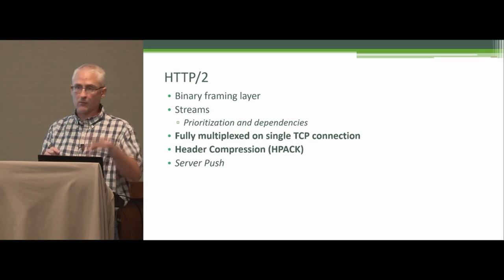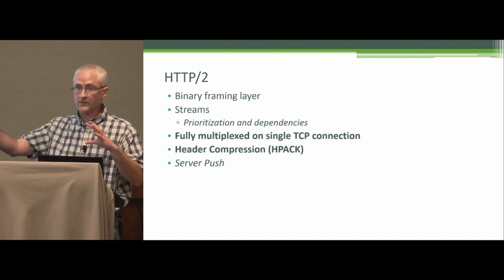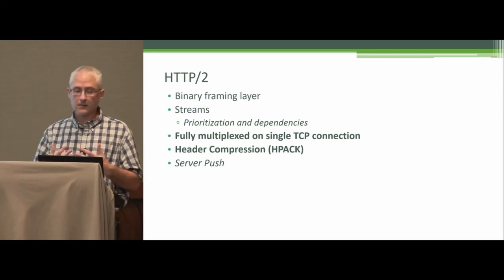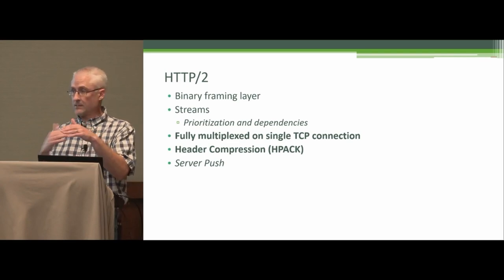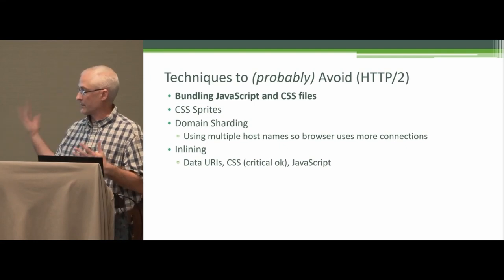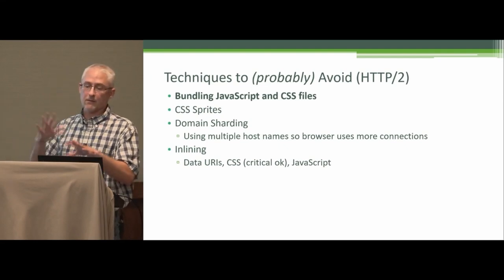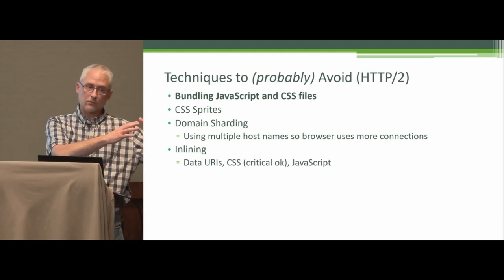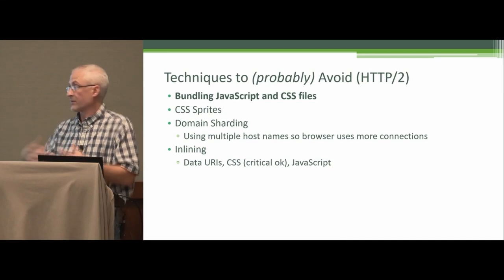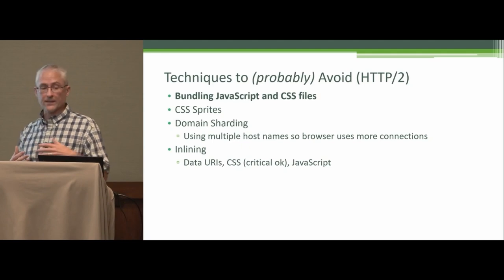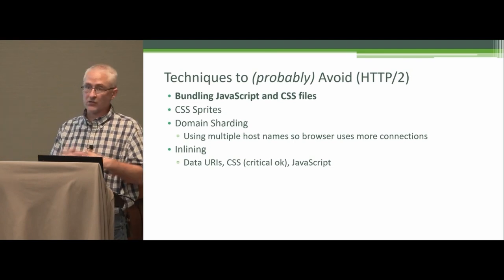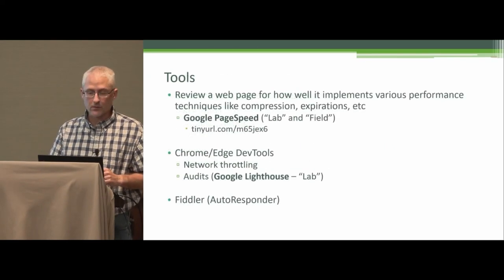HTTP/2 uses a fully multiplexed single connection per host instead of six, so many HTTP/1.1 workarounds like aggressively reducing requests and bundling everything into one file are no longer necessary. People say don't swing to unbundling everything — probably best to have several smaller bundles. With HTTP/2, if you change one line of JavaScript, only that smaller bundle is invalidated rather than the entire monolithic bundle.